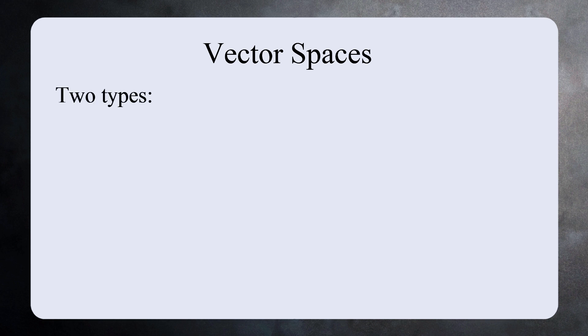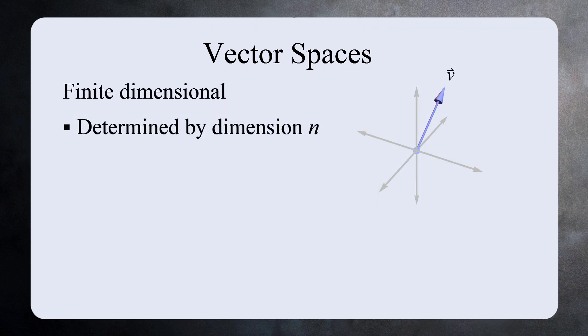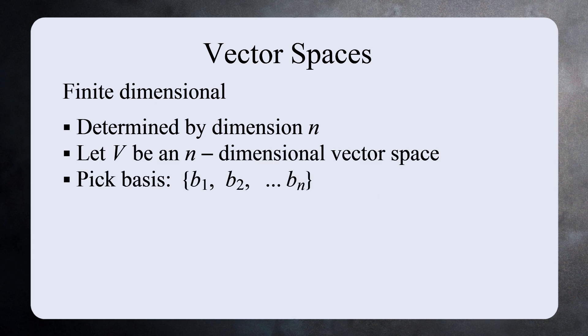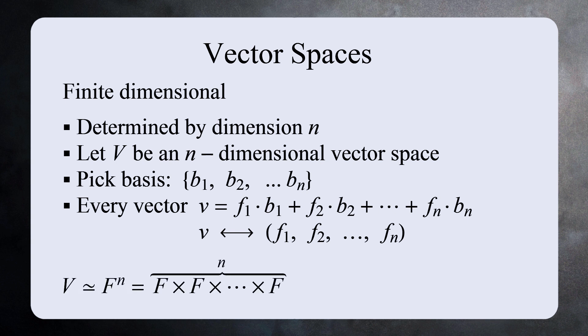Now that we've seen some examples of modules, let's look at the differences between vector spaces and modules. When you study vector spaces, there are two distinct categories: finite dimensional and infinite dimensional vector spaces. Finite dimensional vector spaces have a simple description, and it's completely determined by its dimension. Suppose you have an N dimensional vector space V. Once you pick a basis, every vector is represented by a tuple with N components, where each value is from the field of scalars F. So an N dimensional vector space is isomorphic to F^N, N copies of F.